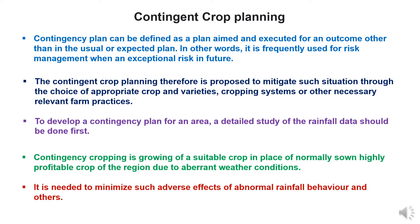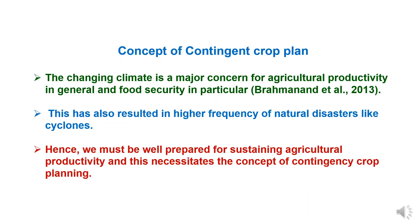The contingent crop planning is proposed to mitigate such situations through the choice of appropriate crops and varieties, cropping systems, or other relevant farm practices. To develop a contingency plan for an area, a detailed study of weather and rainfall data should be done first. Contingency planning is growing of a suitable crop in place of the normally sown, highly profitable crop of the region due to aberrant weather conditions.